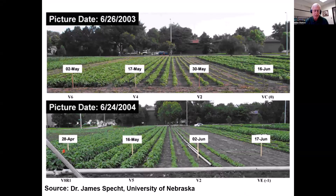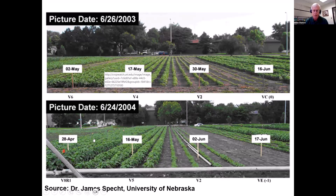This slide, put together by Dr. Jim Spock, is basically a planting date slide, but what it does is show you the size of the canopy. If we plant on time, by the time we're making some of our foliar applications, we have a very large canopy to penetrate. If you're planting later, that's not the story. But if you plant on time, you can get some pretty significant foliage to try to get those droplets through.